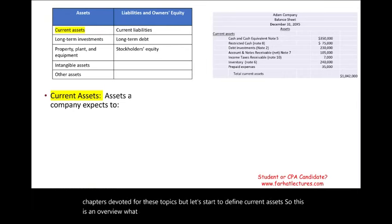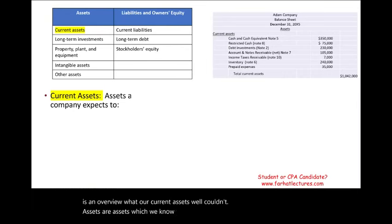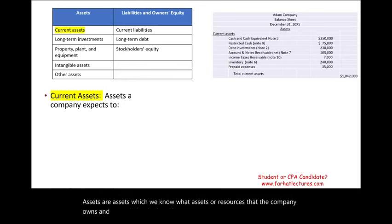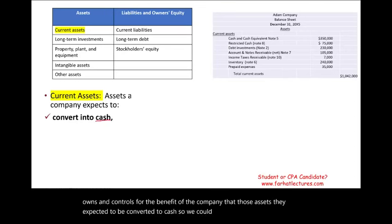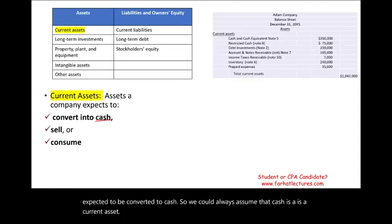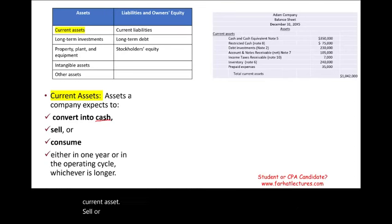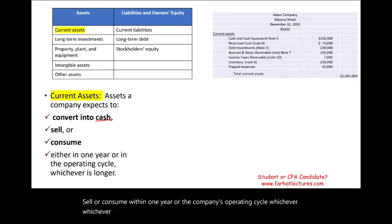What are current assets? Current assets are assets — and we know assets are resources that the company owns and controls for the benefit of the company — but those assets are expected to be converted to cash, sold, or consumed within one year or the company's operating cycle, whichever is longer. We're going to assume one year is longer.